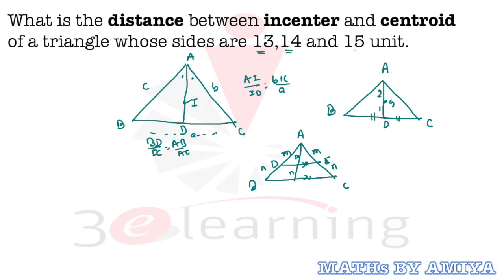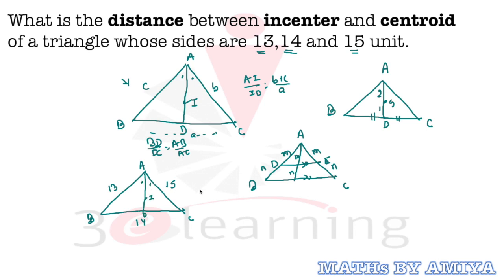So first, in triangle 13-14-15, can we use this concept? Assume 14 is the base. If we say this side is 13, this one is 15, and this one is 14 — call the triangle ABC with AD as the angle bisector. The ratio AI upon ID equals the sum of the left and right sides upon the bottom: (13 + 15) upon 14, which is 28 upon 14, giving 2:1. Here AD is the angle bisector, but 2:1 matches the centroid ratio — this is by chance.